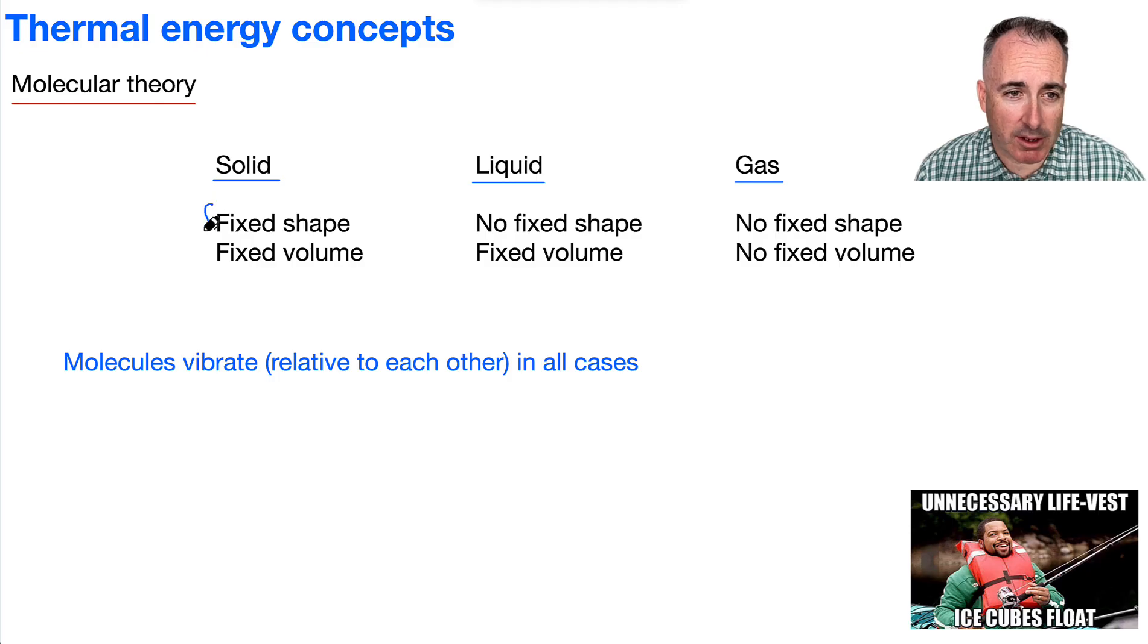We characterize a solid by something that has a fixed shape and a fixed volume, whereas a liquid will have no fixed shape but does have a fixed volume, and a gas has neither that's fixed. Now, maybe it helps to see these visually.